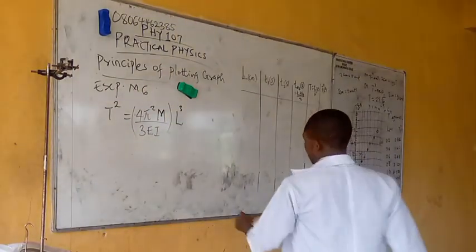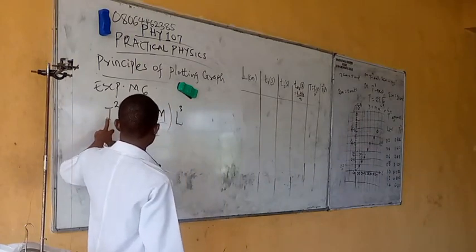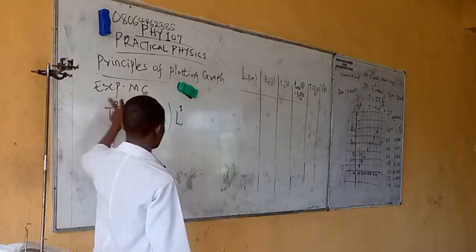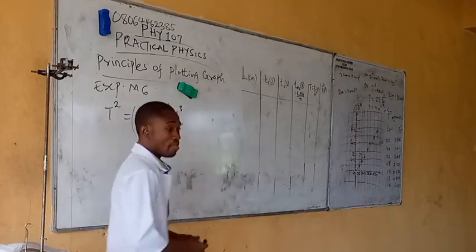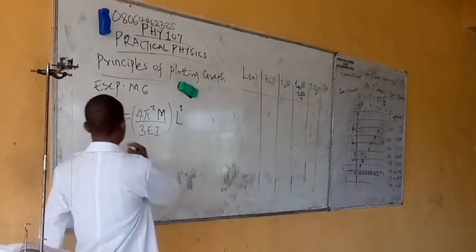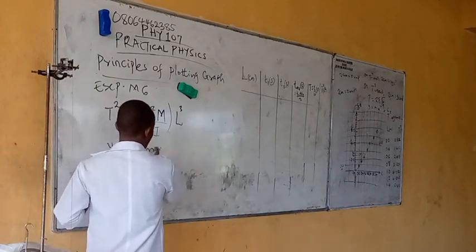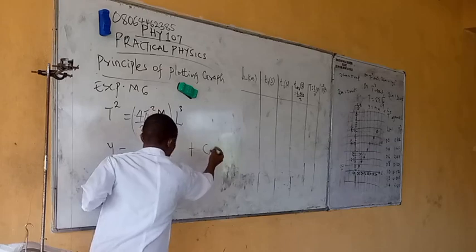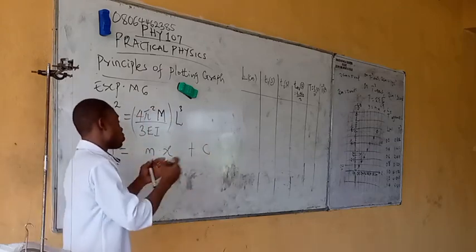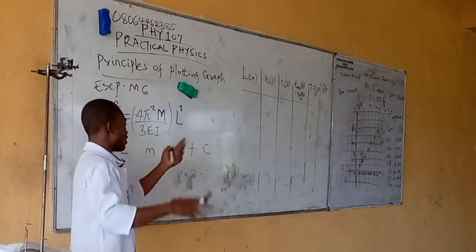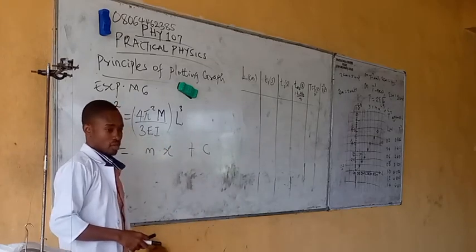Now, if the theory of the experiment is telling us that t squared should be plotted against LQ, always remember to compare with y equals mx plus c. This is very important, because when you are asked some questions, you usually get the answer from comparing this relationship.